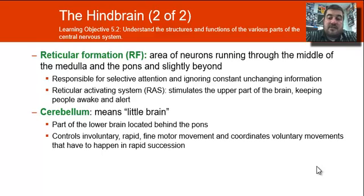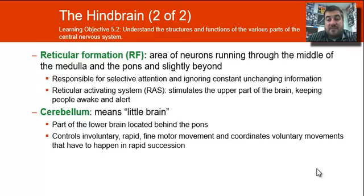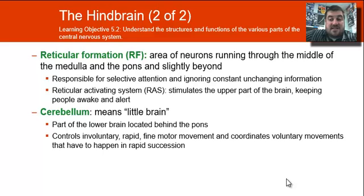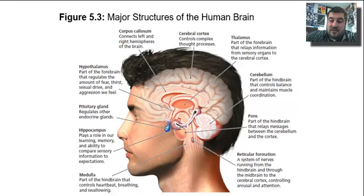The cerebellum is called the little brain — it's located on the lower part of the brain behind the pons, and it's called little brain because it looks like a little brain. It is involved in coordination, fine motor movements, and voluntary movements that have to happen in rapid succession. The cerebellum is right here on the diagram.